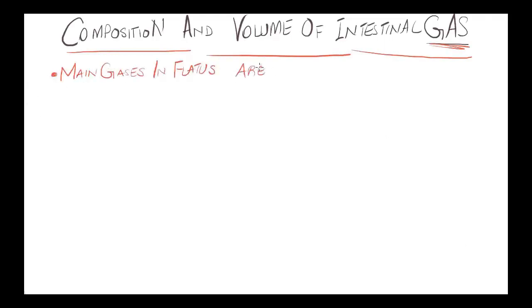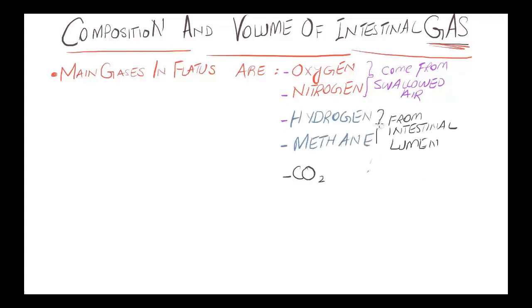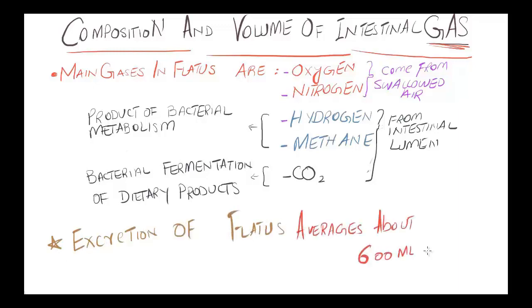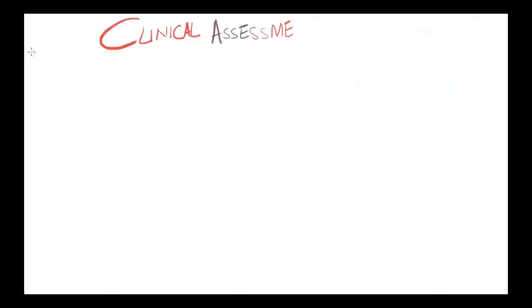Main gases in the flatus are oxygen, nitrogen, hydrogen, methane, and carbon dioxide. Oxygen and nitrogen come from swallowed air. Hydrogen, methane, and carbon dioxide come from the intestinal lumen. Hydrogen and methane are produced as a result of bacterial metabolism. Carbon dioxide results from bacterial fermentation of dietary products. Excretion of flatus averages about 600 ml per day.